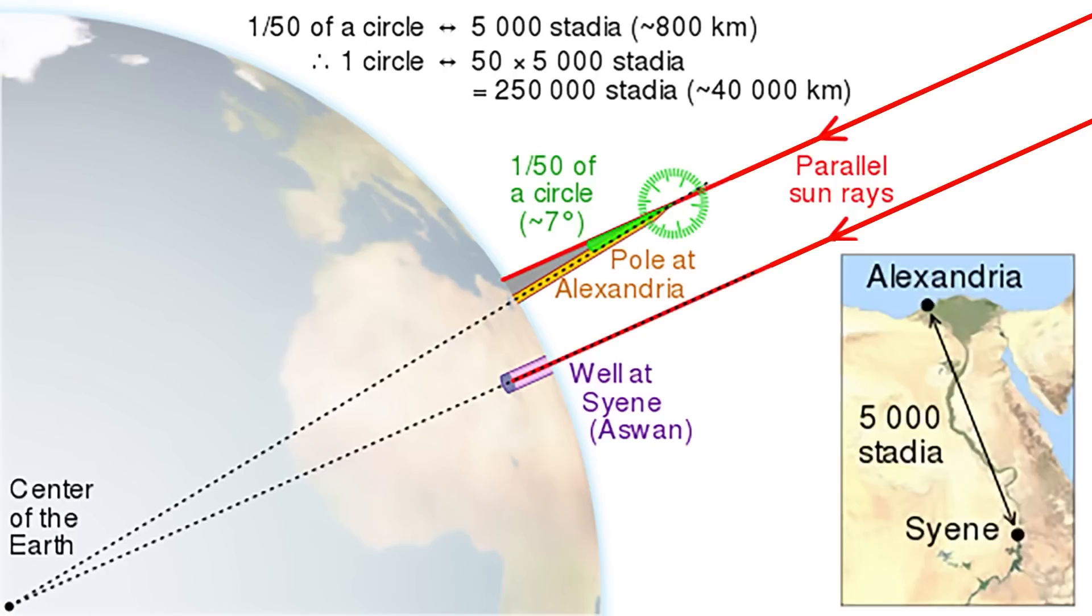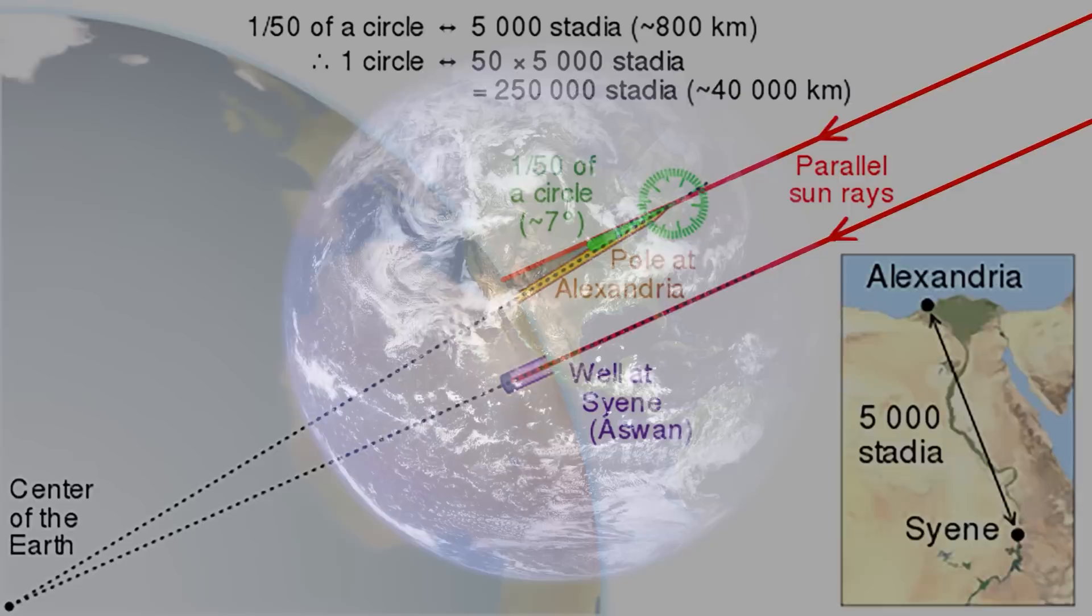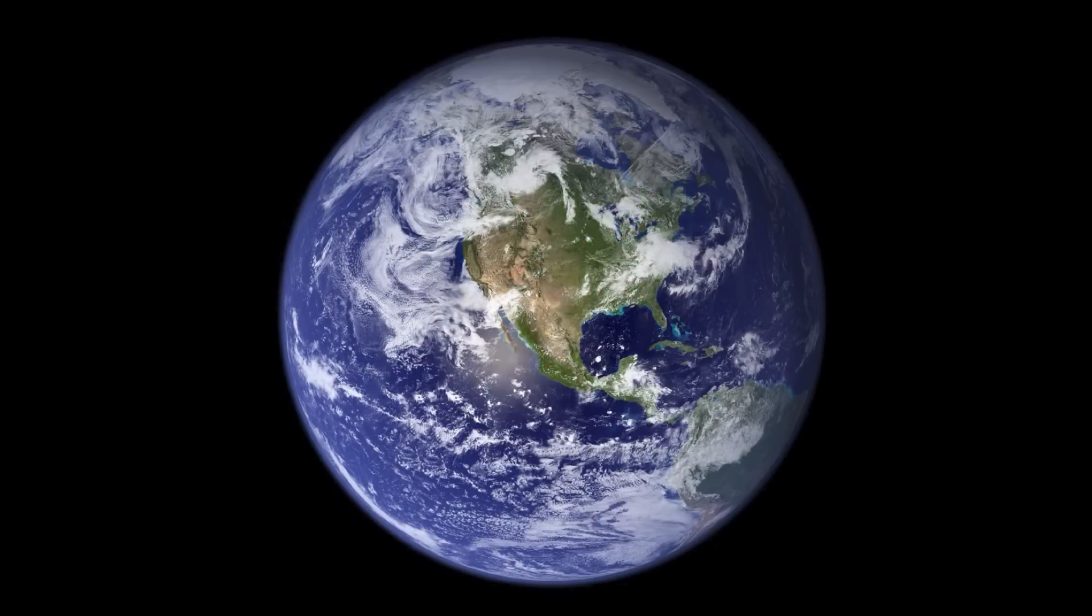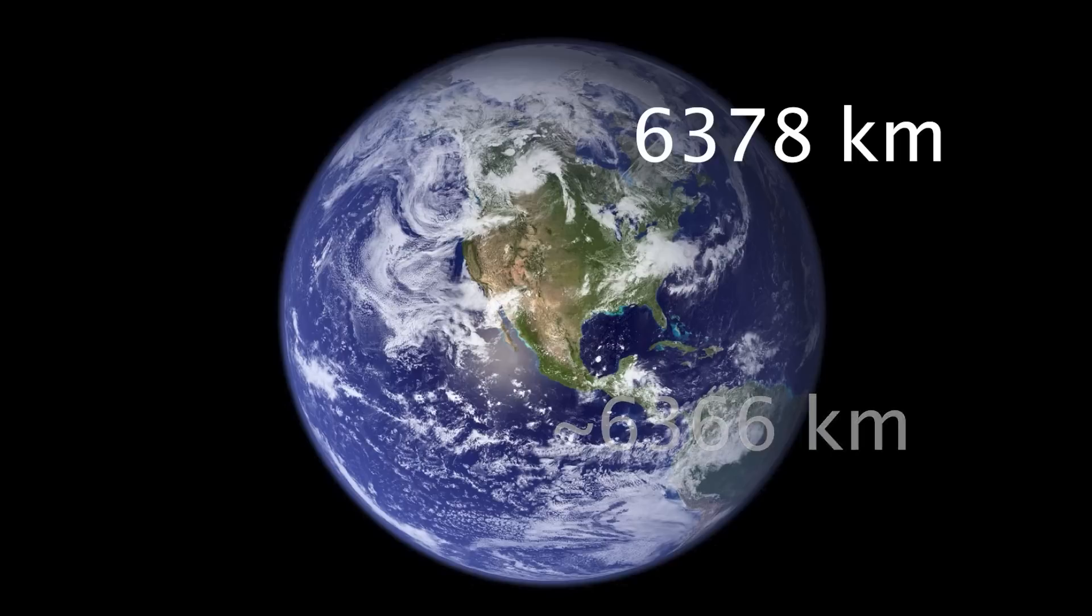Now, since it's a circle, we assume the Earth is round, so the circumference would be 2 pi divided by that, and that gives us, according to his measurements, about 6,366 kilometers as a radius of the Earth. Now, that's a really good measurement because it's within 1% of the modern value of about 6,378 kilometers.